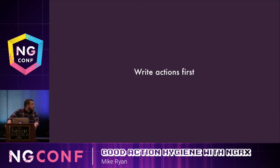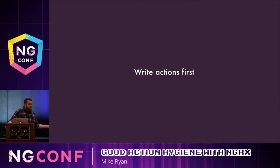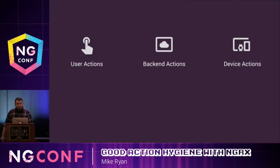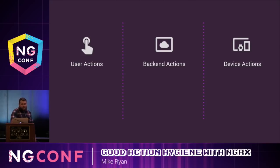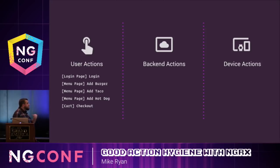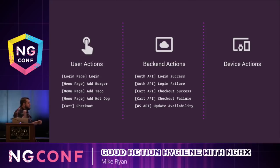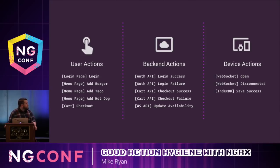The best way I've found to avoid these pitfalls is to write actions first when you go to build a new feature. This works really well from a process standpoint, because if you're on a team you need the action to be written before you can write reducers, effects, or containers. By writing those actions first, you're unblocking other developers on your team from building the rest of that feature in parallel. I divide the list of actions based on their event source. For user actions, I divide them based on which page or component they're coming from. For backend actions, I separate them based on the API I'm going to be interacting with. For device actions, I separate those based on the browser API — whether that's a WebSocket or an IndexedDB connection.